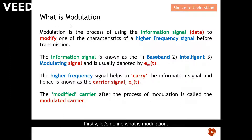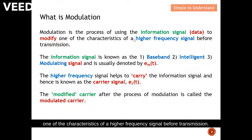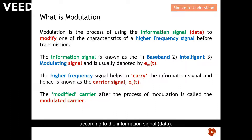Firstly, let's define what is modulation. Modulation is the process of using the information signal or data to modify one of the characteristics of a higher frequency signal before transmission. In short, modulation is the process of modifying the higher frequency signal according to the information signal. I'll illustrate a bit more on this concept shortly.